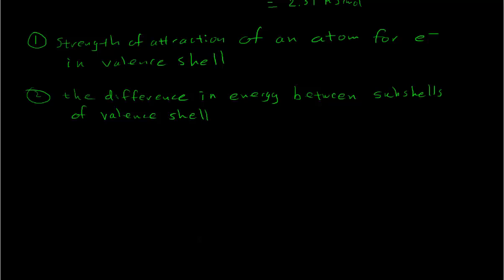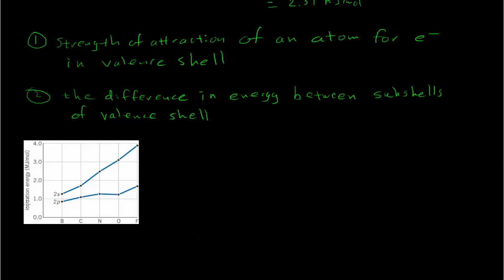To show how that difference in energy varies as we go across the periodic table, let's look at this graph. It shows the ionization energy from photoelectron spectra in megajoules per mole for boron, carbon, nitrogen, oxygen, and fluorine. For boron, the 2s and 2p ionization energies are fairly close together. As we move along this period, this gap begins to widen, correlating with an increase in average valence electron energy. The gap is narrow at the beginning of the row and increases as we go further along.